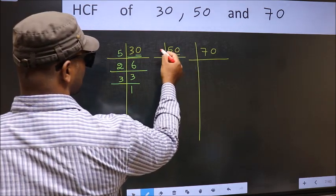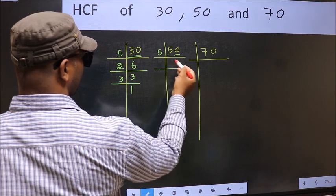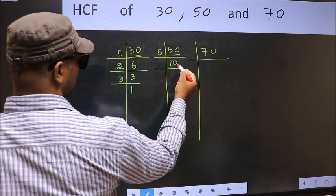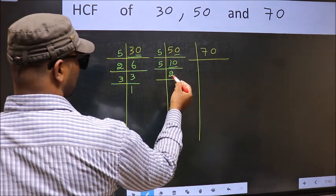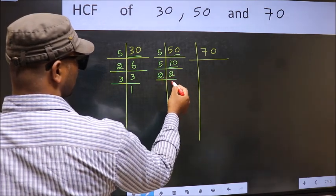Last digit 0, so take 5. When do we get 50 in 5 table? 5 times 10 is 50. Now 10 is 5 times 2 is 10. Now 2 is a prime number, so 2 times 1 is 2. Now the other number.